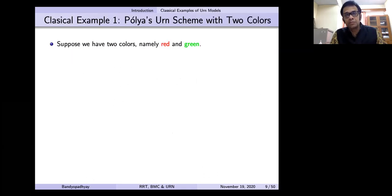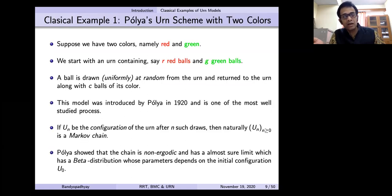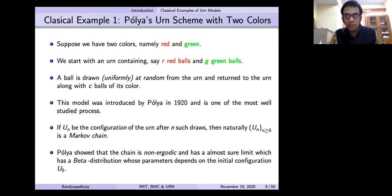The classical example — I think I don't need to tell this community — is that in 1920, Pólya's seminal work is about an urn with two colors, red and green. You select a ball uniformly at random and check its color. If it is green, you put a green ball back; if it is red, you put a red ball in. Pólya showed that there is an almost sure limit, and the limiting random variable has a beta distribution. The distribution may depend on the initial configuration, so the configuration forms a Markov chain but it's really not ergodic — it never forgets the initial configuration.